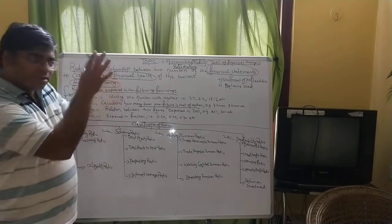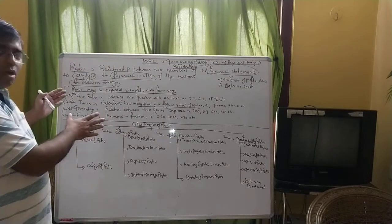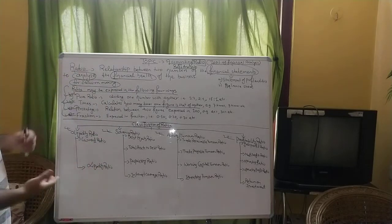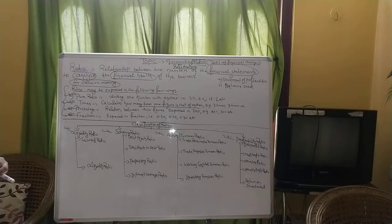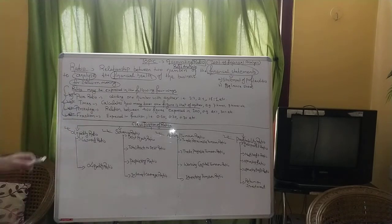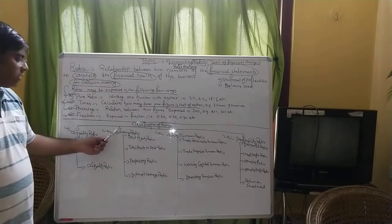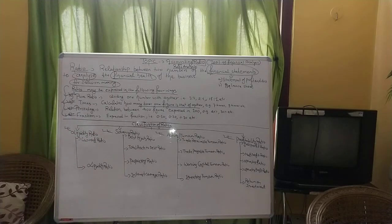This was a brief introduction to the chapter on accounting ratio. In the next video, we will calculate the formulas and do a few sums. We will start with liquidity ratio first — current ratio and liquidity ratio — and then move on to solvency ratio. Thank you.